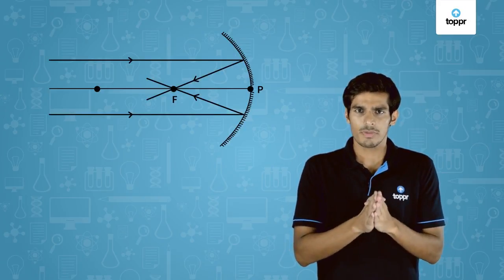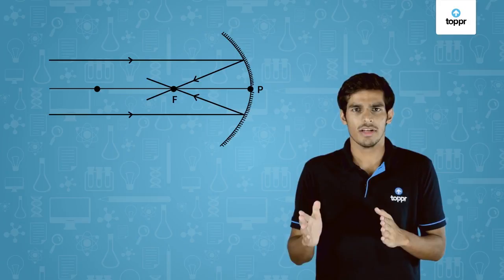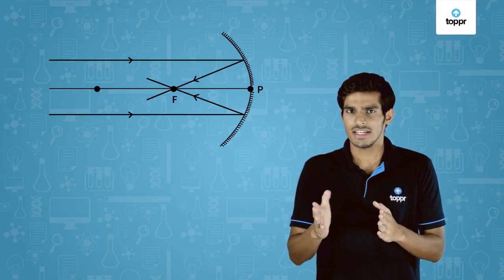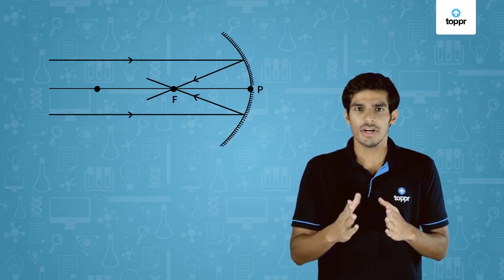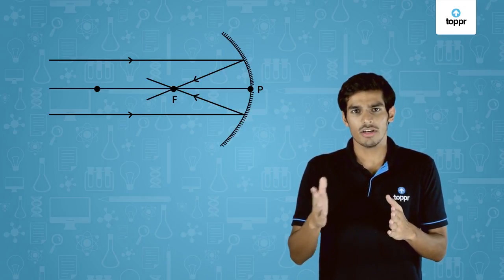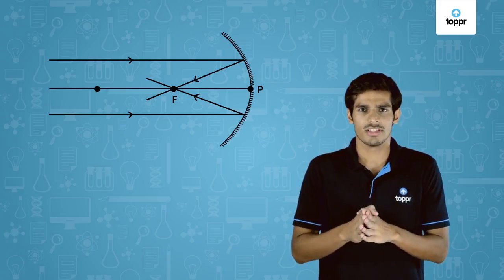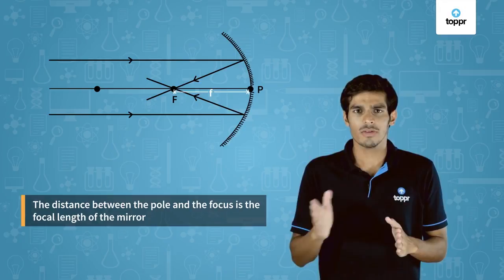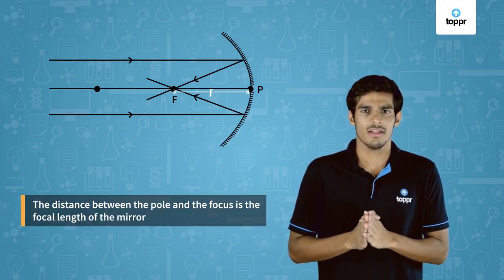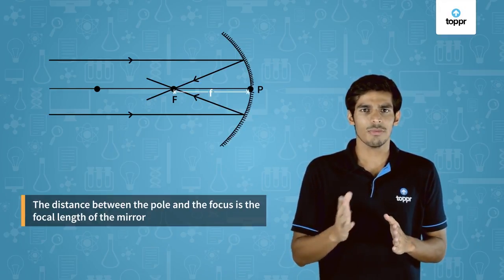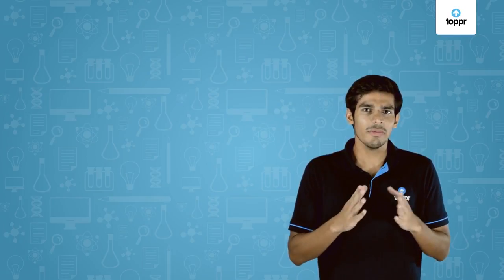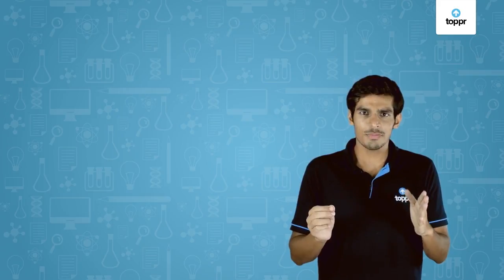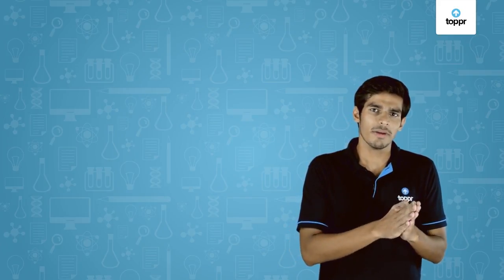A number of rays parallel to the principal axis fall on the concave mirror and after reflection they meet or intersect at a point on the principal axis. This point where these rays meet or converge is called the principal focus and it is represented by f. The distance between the pole and the focus of the mirror is called the focal length and it is represented by small f. In the activity we performed, the distance between the pole and the point where we got the brightest spot is the focal length of that mirror we used.